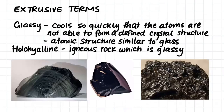Glassy igneous rock forms when molten rock cools even more quickly. For example, glassy rock will form when a lava flows straight into the sea and the molten rock is quenched. This means that the rock will cool so quickly that no crystal structure is able to form at all, and the glassy igneous rock has a similar atomic structure to glass itself.